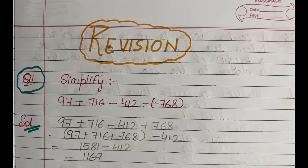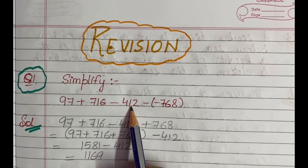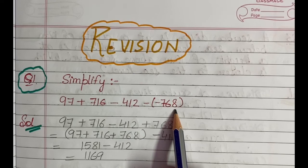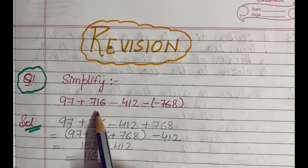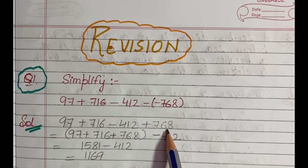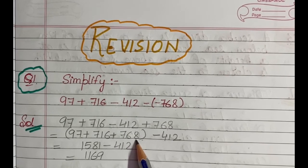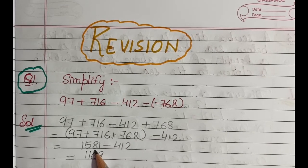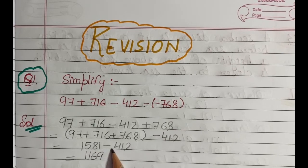Let us do some questions. The first question says: Simplify 97 plus 716 minus 412 minus minus 768. We rewrite it as 97 plus 716 minus 412 plus 768, since minus minus becomes plus. Then we combine the positive integers: 97 plus 716 plus 768 equals 1581. Then 1581 minus 412 gives us 1169 as the answer. Hopefully, it is clear to you.